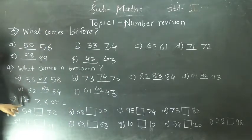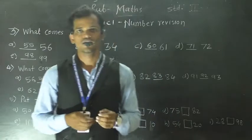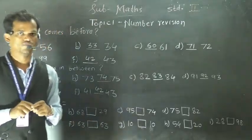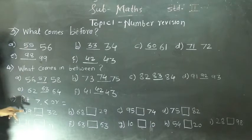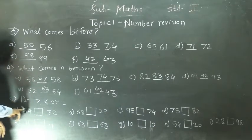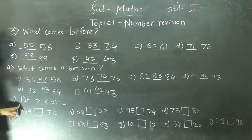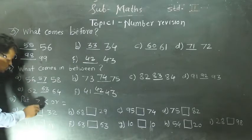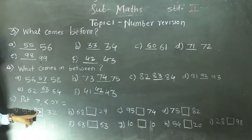Next instruction: put smaller number, bigger number, or equal to sign. So you know that while comparing numbers, the open side of this sign should be at the greater number. And if both numbers are the same, then we use the equal to sign. So here, first we will compare these two numbers: 59 and 32. These are both two-digit numbers, so first we compare the tens place digit. In 59, 5 is the tens place digit. In 32, 3 is the tens place digit. So 5 is greater than 3, so 59 is greater than 32. The open side of this sign should be at the greater number, so we will use this sign here.